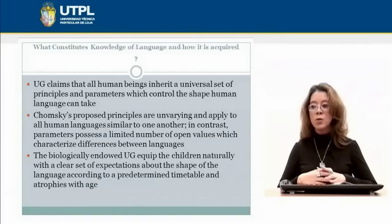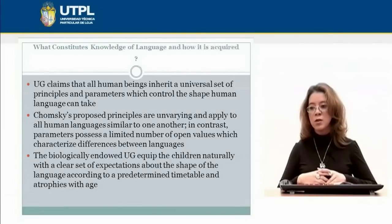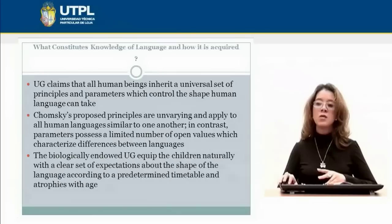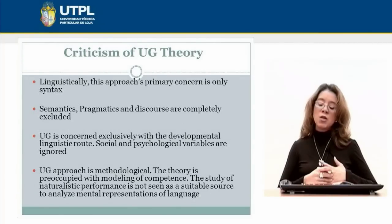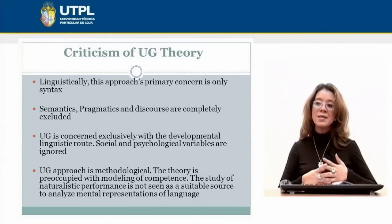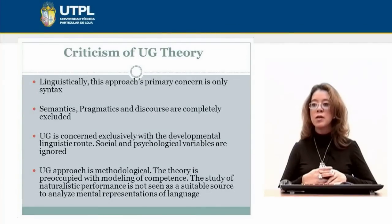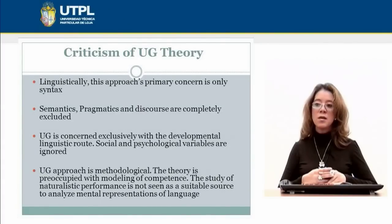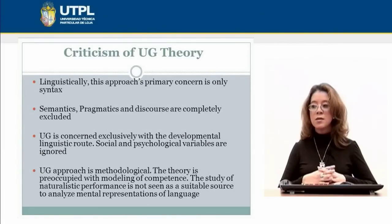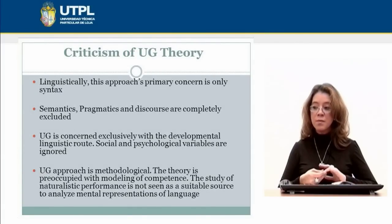The biologically endowed universal grammar equips children naturally with a clear set of expectations about the shape of language according to a predetermined timetable, and it atrophies with age. Some scientists and psychologists criticize the universal grammar theory because linguistically this approach is primarily concerned only with syntax — semantics, pragmatics, and discourse are completely excluded. Social and psychological variables are ignored, and the universal grammar approach is considered merely methodological, preoccupied with modeling competence.